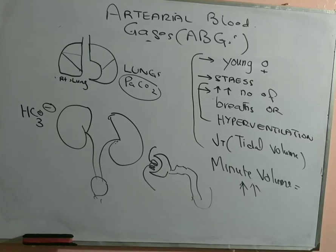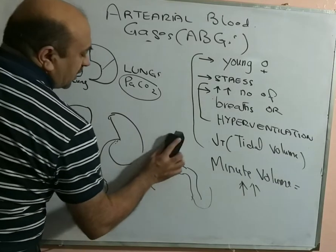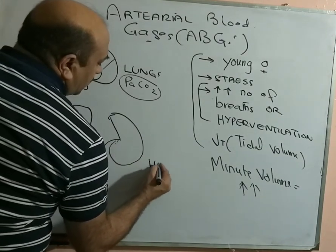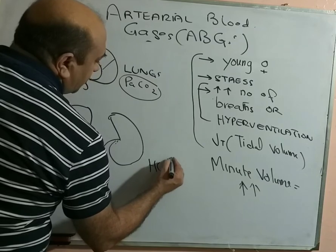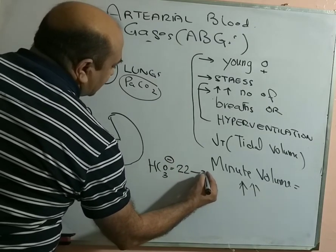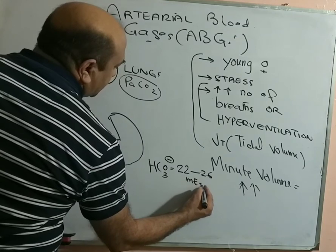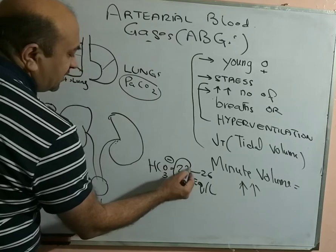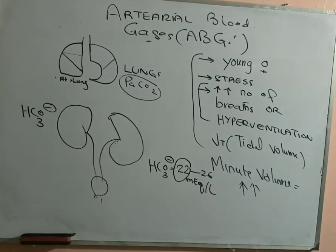The normal concentration of bicarbonate in the body is 22 to 26 milliequivalents per liter. Whenever bicarbonate goes less than 22 milliequivalents per liter, we call it acidosis. So when bicarbonate decreases below 22, it will cause acidosis. Because the primary problem is the partial pressure of CO2, bicarbonate will decrease — causing metabolic acidosis — which will push the pH back towards normal.